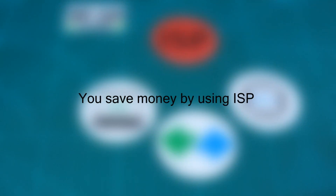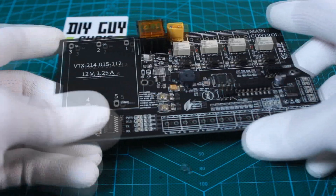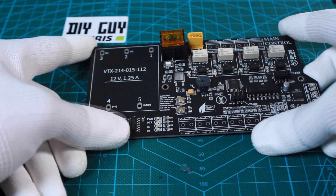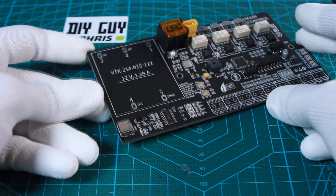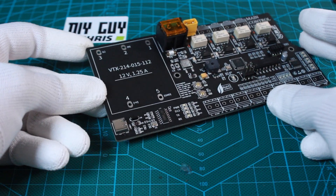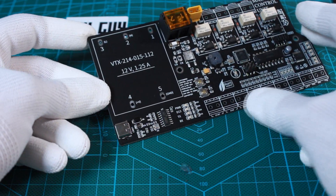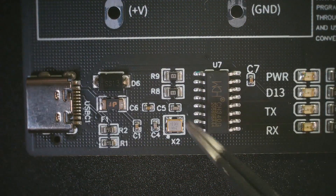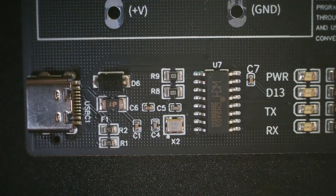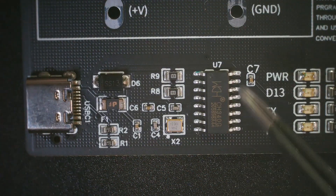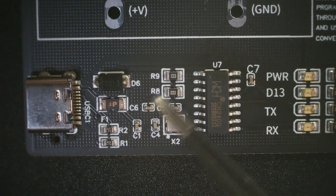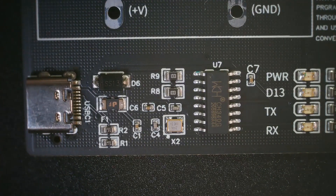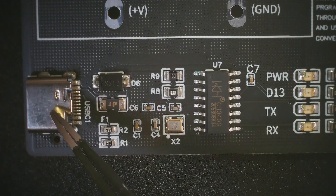One of the biggest benefits of using ISP is that it can greatly reduce development time and lower the cost, as you will not need extra electronics components to upload your code to the MCU. Here is an example of a circuit board equipped with a USB to TTL converter for programming and its related electronics network plus the USB connector.